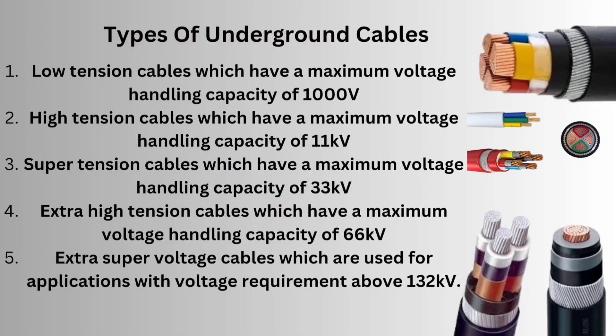Types of underground cables: Low tension cables have a maximum voltage handling capacity of 1,000 V. High tension cables have a maximum voltage handling capacity of 11 kilovolts. Super tension cables have a maximum voltage handling capacity of 33 kilovolts. Extra high tension cables have a maximum voltage handling capacity of 66 kilovolts. Extra super voltage cables are used for applications with voltage requirements above 132 kilovolts.